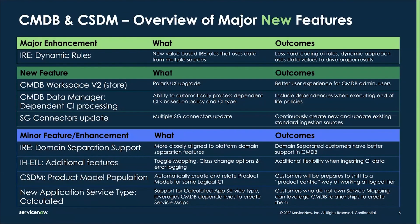Today we're going to cover some major enhancements, mostly on the dynamic rules capability that we added to IRE. We're going to cover the CMDB Workspace version 2, which is available in the store as well, but in the San Diego release we will be shipping CMDB Workspace version 2. In the CMDB Data Manager we will be talking about a new feature for Dependent CI Processing. We're going to be covering Service Graph Connectors updates, IRA domain separation support which has been improved, IETL additional features, the CSDM product model population capabilities, and the new application service type called Calculated which has been added in the user experience for application services in San Diego.